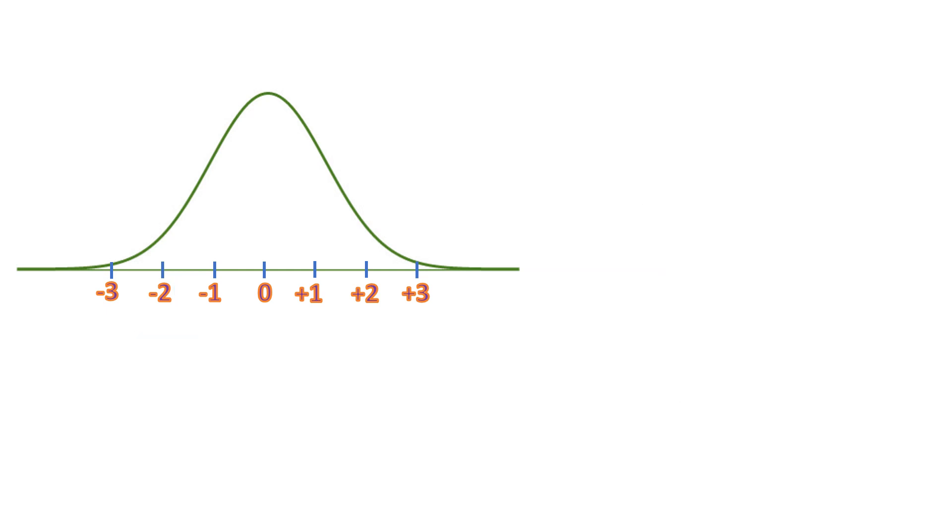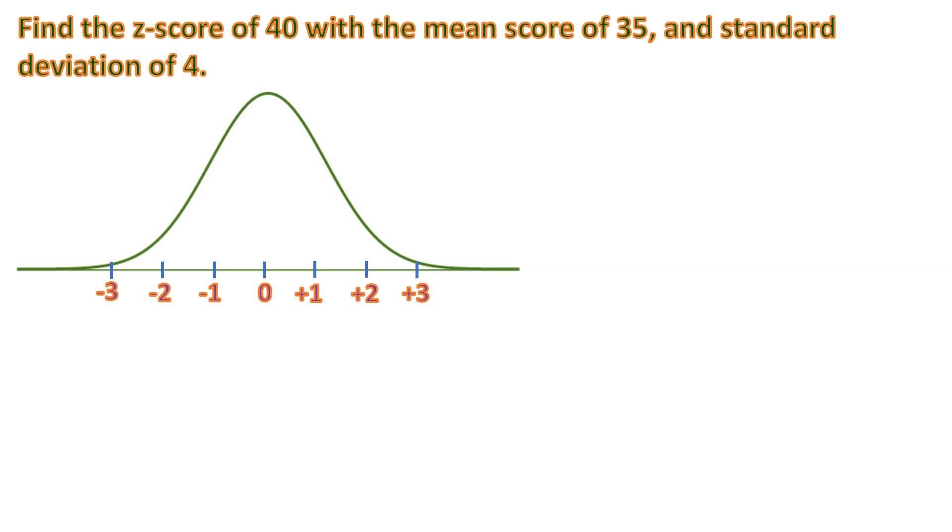So another example, let's say we are now asked to find the z-score of 40 with the same mean score of 35 and standard deviation of 4. So let us solve this. We are going to follow the same formula: z equals x minus mean over standard deviation. So this is actually a z-score of a sample data.